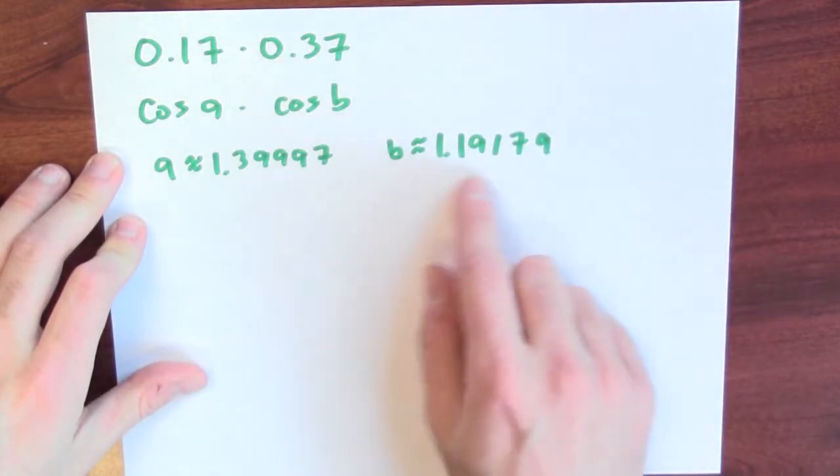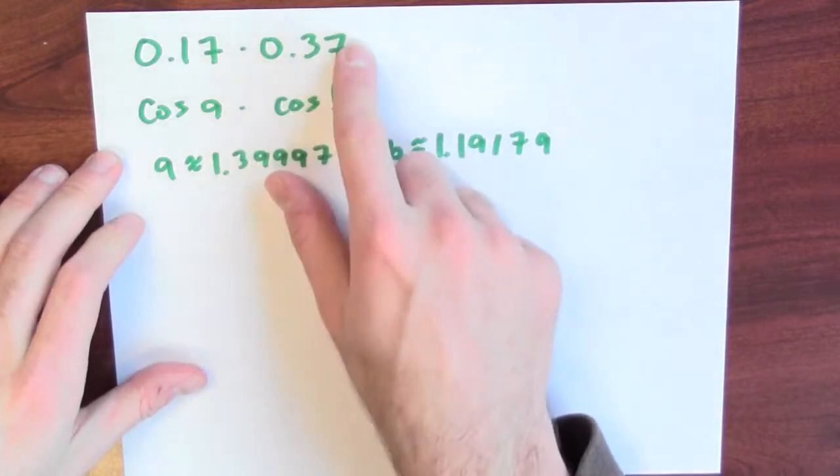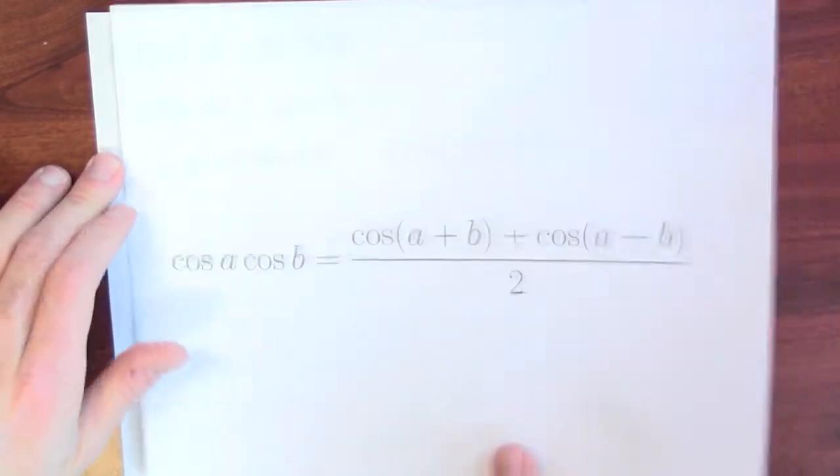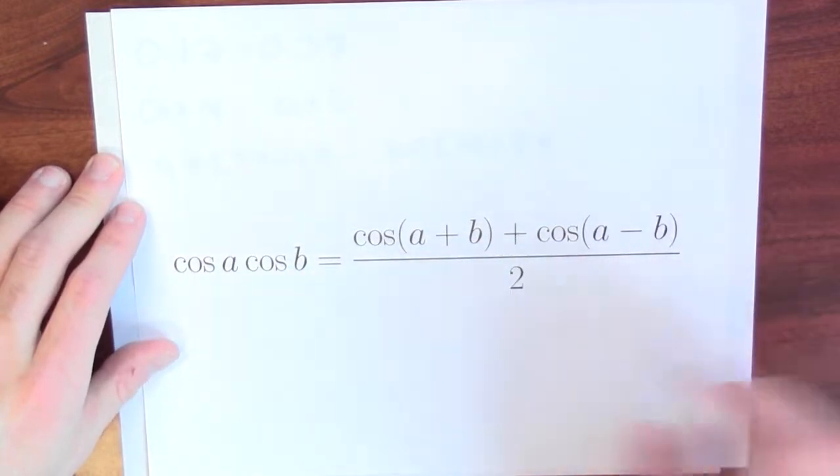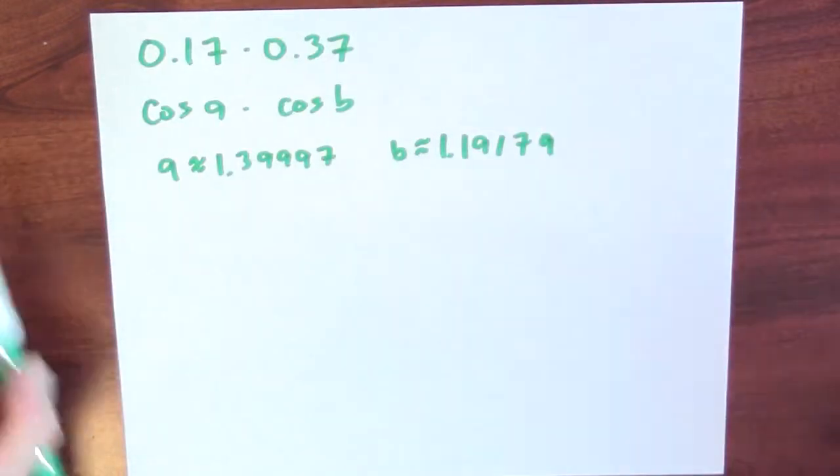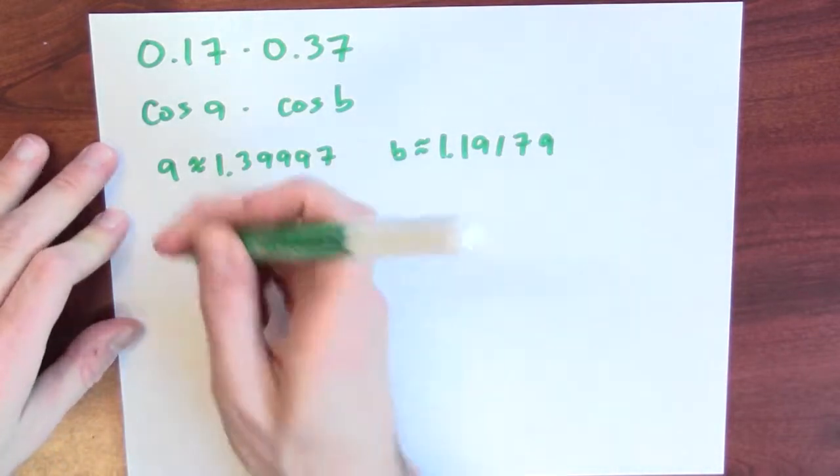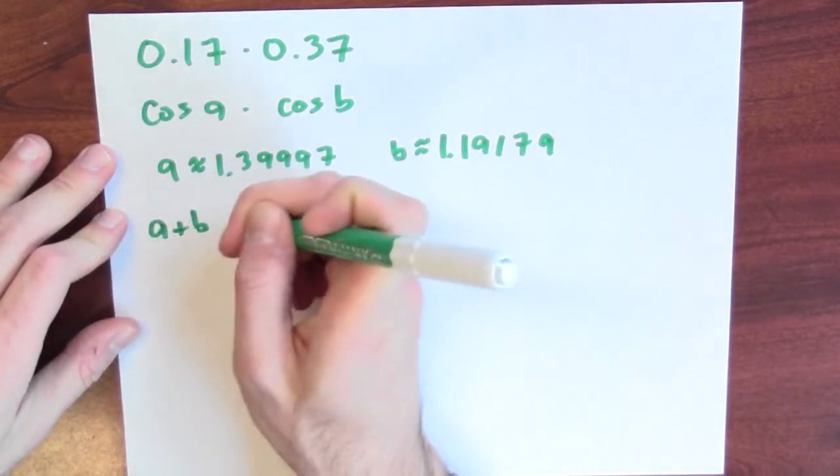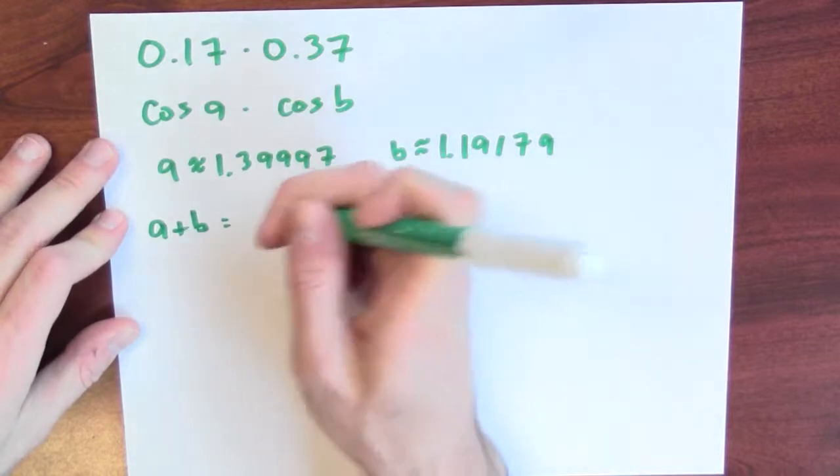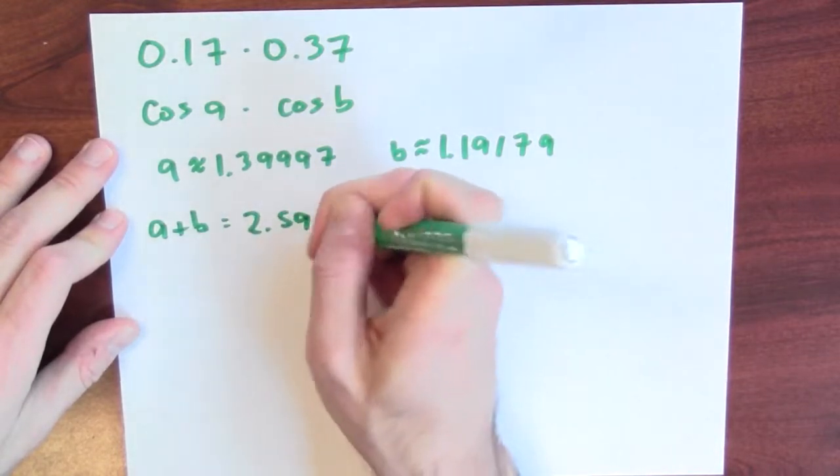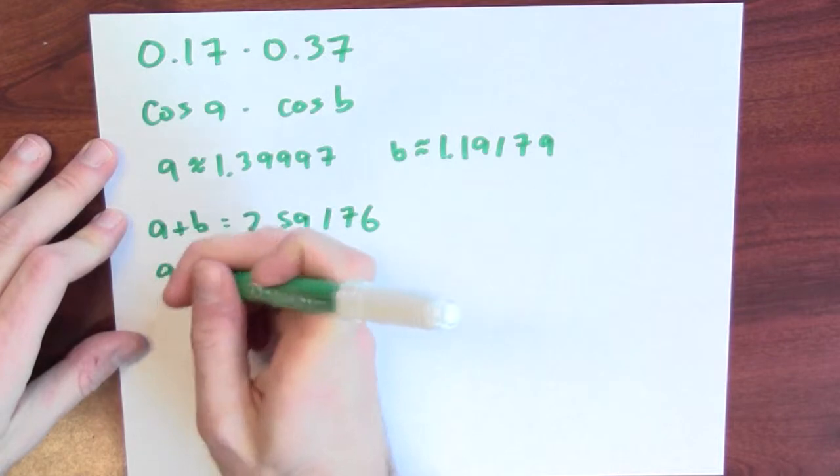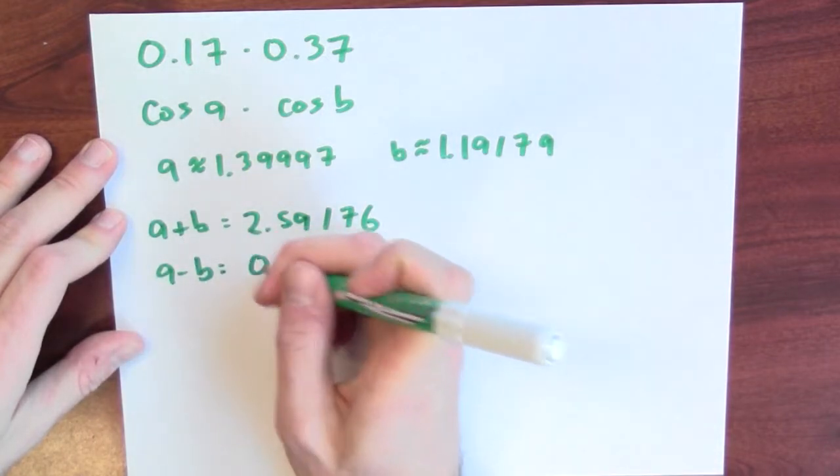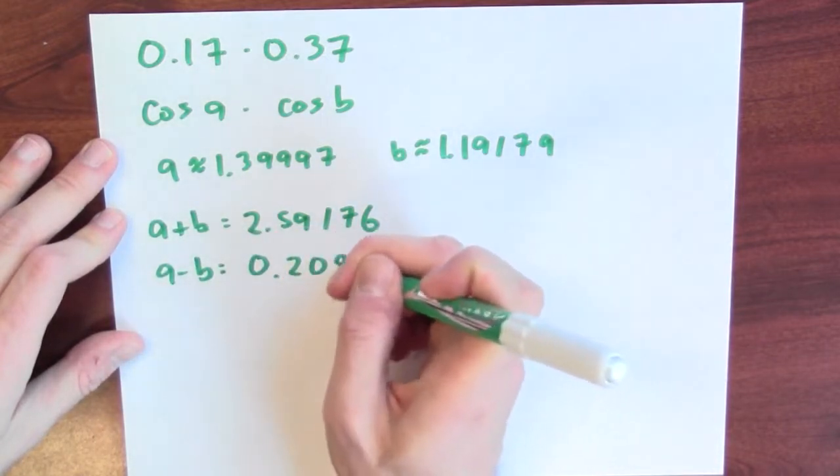I can also use my table to compute arc cosine of 0.37 to be about 1.19179. In other words, if I take cosine of this number, I get really close to 0.37. Now the formula that we're trying to use tells me to compute a plus b and a minus b. So given that I've got these approximate values for a, I can compute a plus b to be 2.59176 and a minus b to be 0.20818.